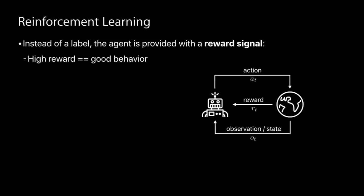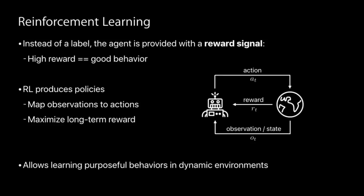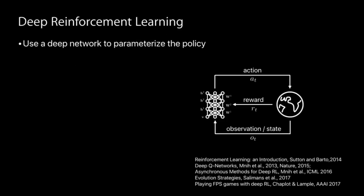Reinforcement learning is a very old field. Instead of a label, an agent is provided with a reward signal — high reward means good behavior. Reinforcement learning essentially produces policies, which you can think of as mappings from observations to actions, with the goal of maximizing some long-term reward. In deep reinforcement learning, we use deep neural networks to parameterize the policy. The input could be high-dimensional, and the output of the deep neural network is an action.